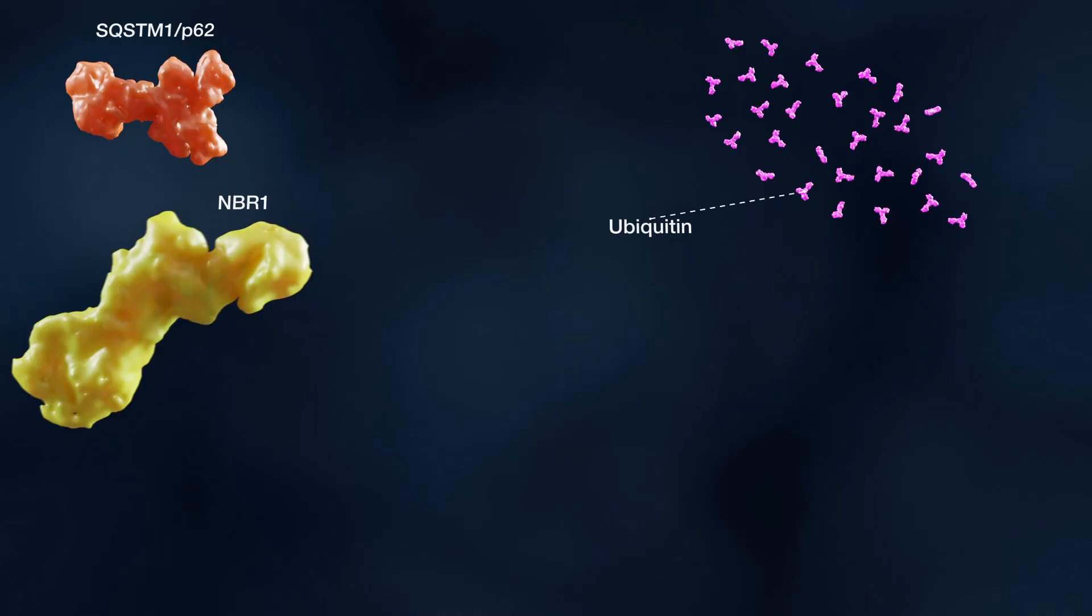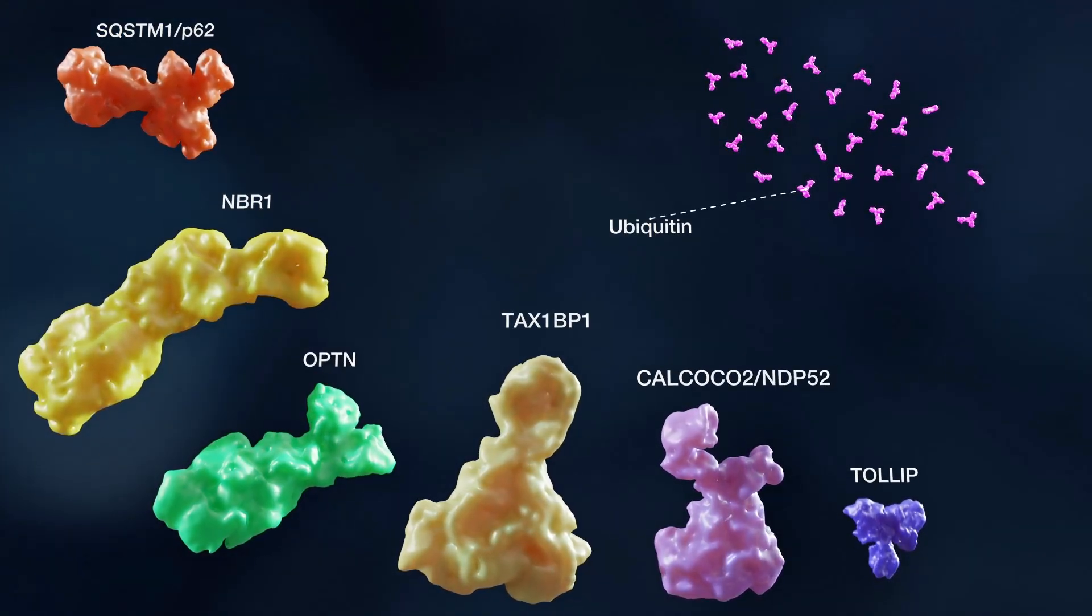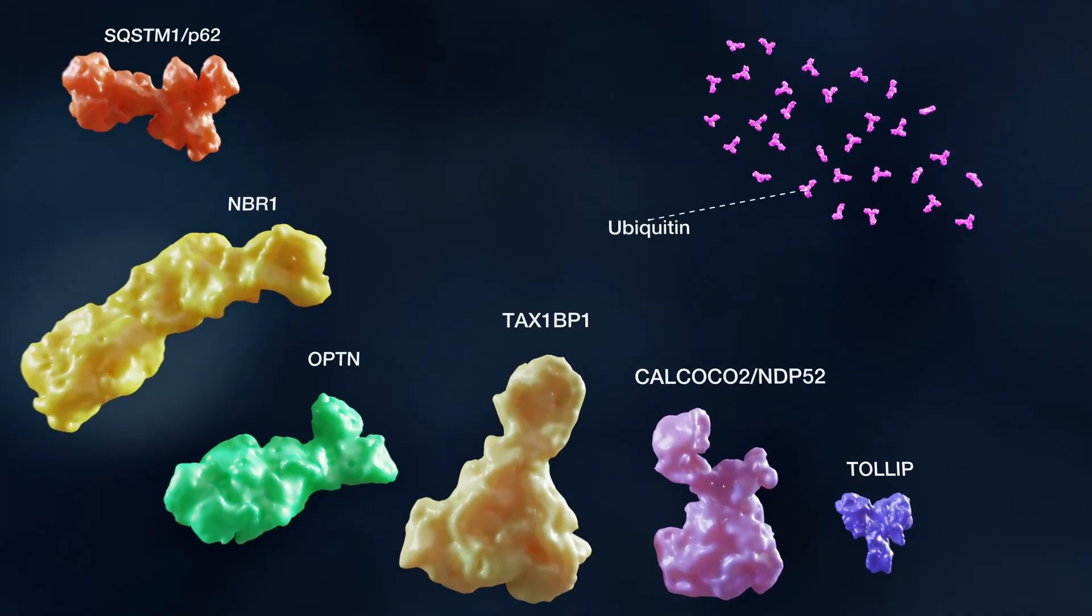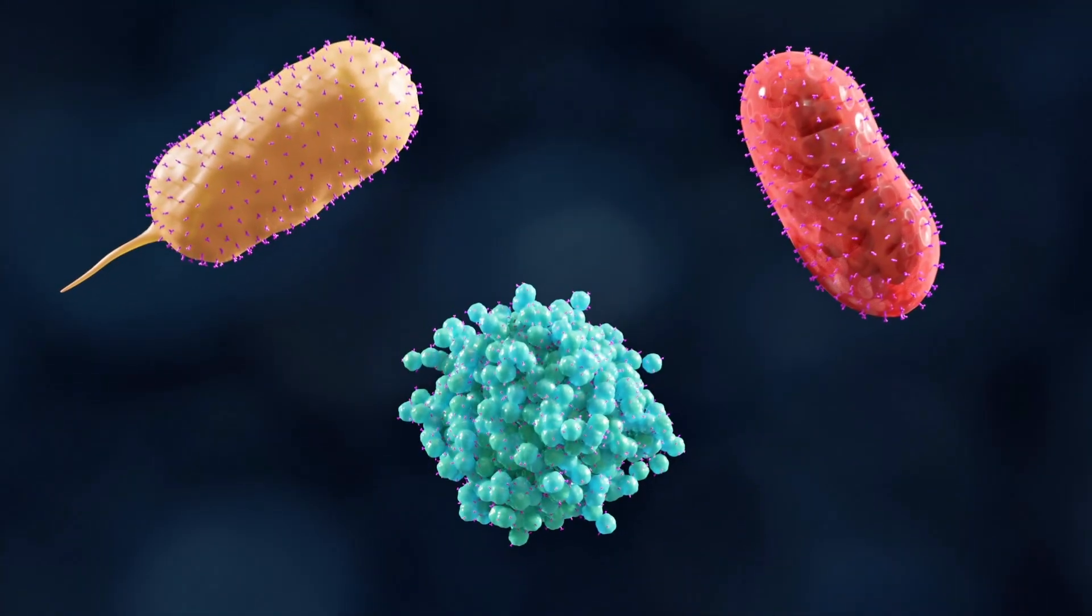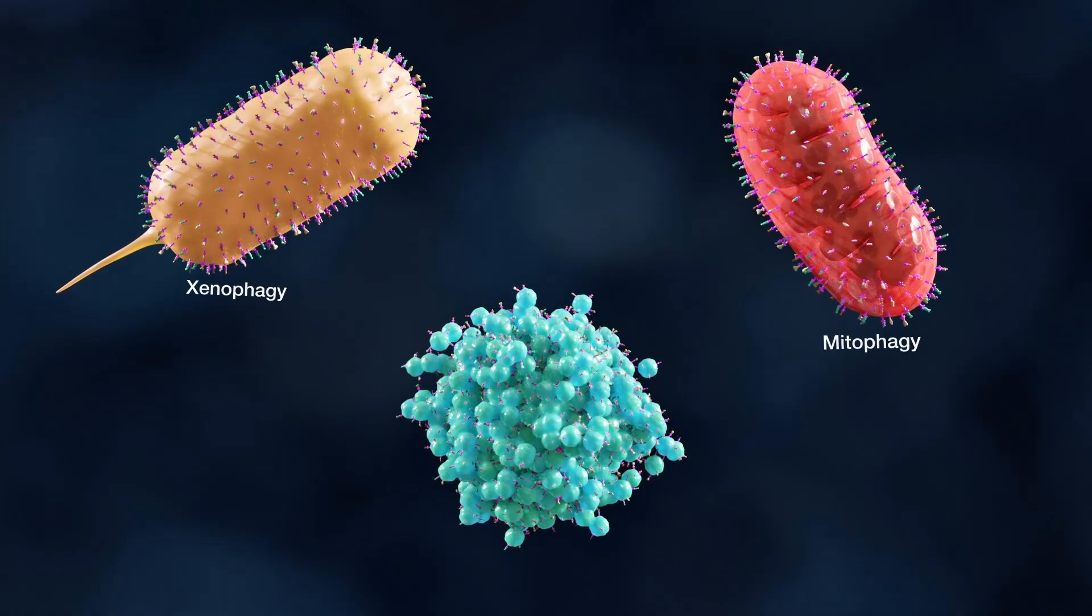For example, P62, NBR1, Optineurin, TAX1BP1, NDP52, and TOLLIP all have an ubiquitin-binding domain to bind ubiquitinated cargos during xenophagy, mitophagy, and aggrephagy.